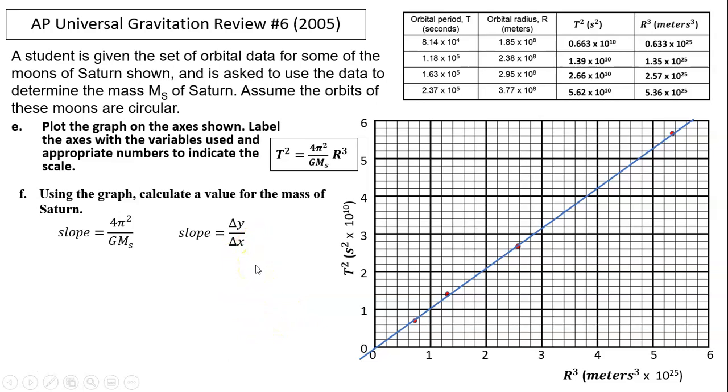So first, to find the slope, we need to find two points on the line. Take a look at the data points. Not exactly, they are perfectly on the line. So you can choose the point that's on the line. It doesn't have to be the data point. These are the points I choose. I choose this one because it's easy for me to read. The other one I choose is zero because it's very convenient for me. And this is the slope. Be careful with the units. It's t², which is second squared, over r³, which is meter cubed.